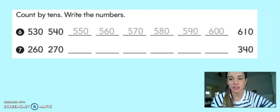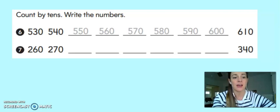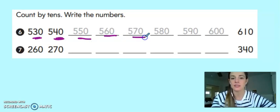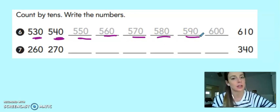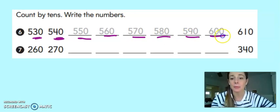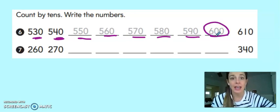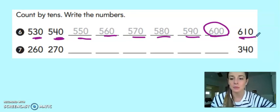Let's take a look. First, we start with 530, 540. Then we went to 550, 560, 570, 580, 590. But after I got to 90, if I add 10 more onto 90, I jump up to the next new 100. And now I have 600. Then I add 10 more to get 610.